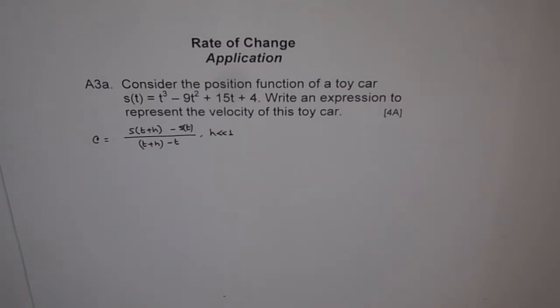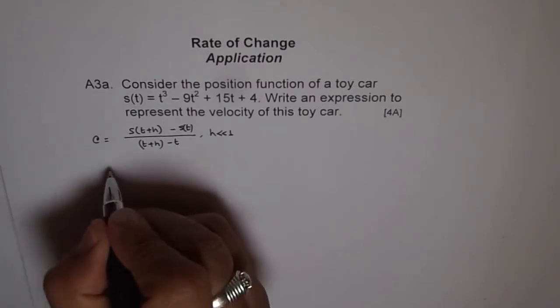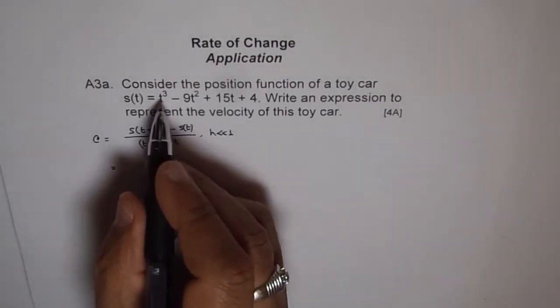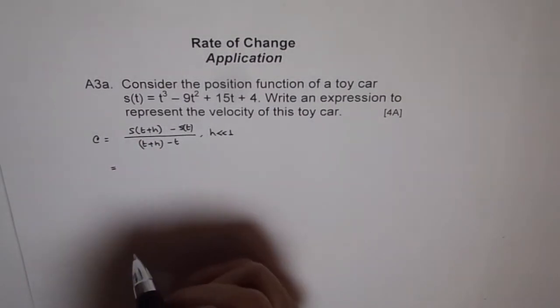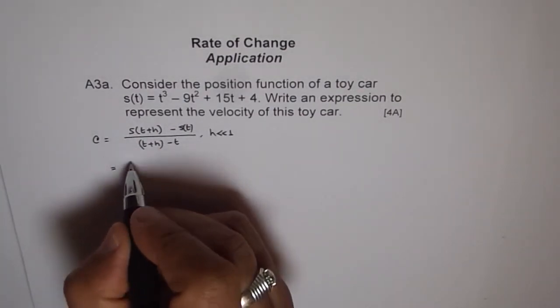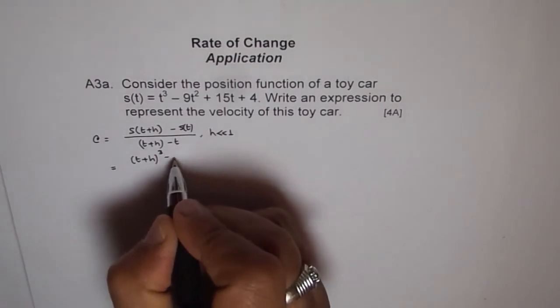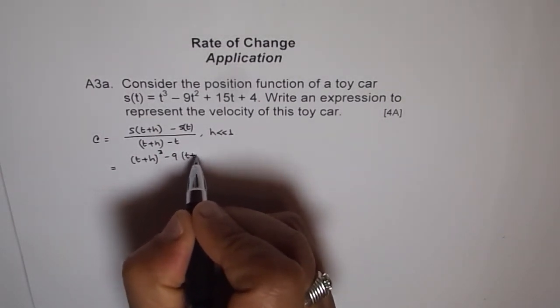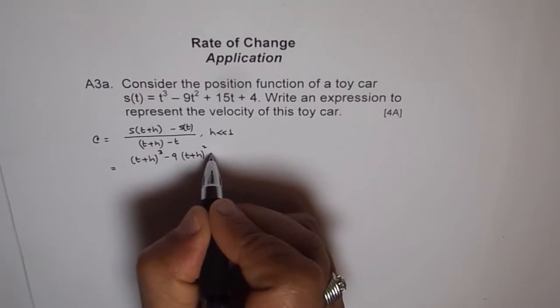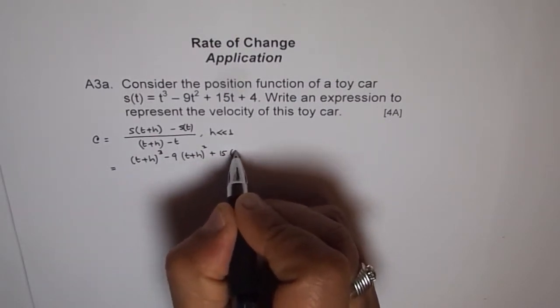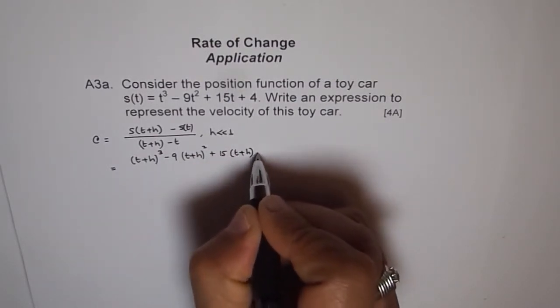Now here, we will put (t+h)³ - 9(t+h)² + 15(t+h) + 4. This is the first part. Let me put it in square brackets.